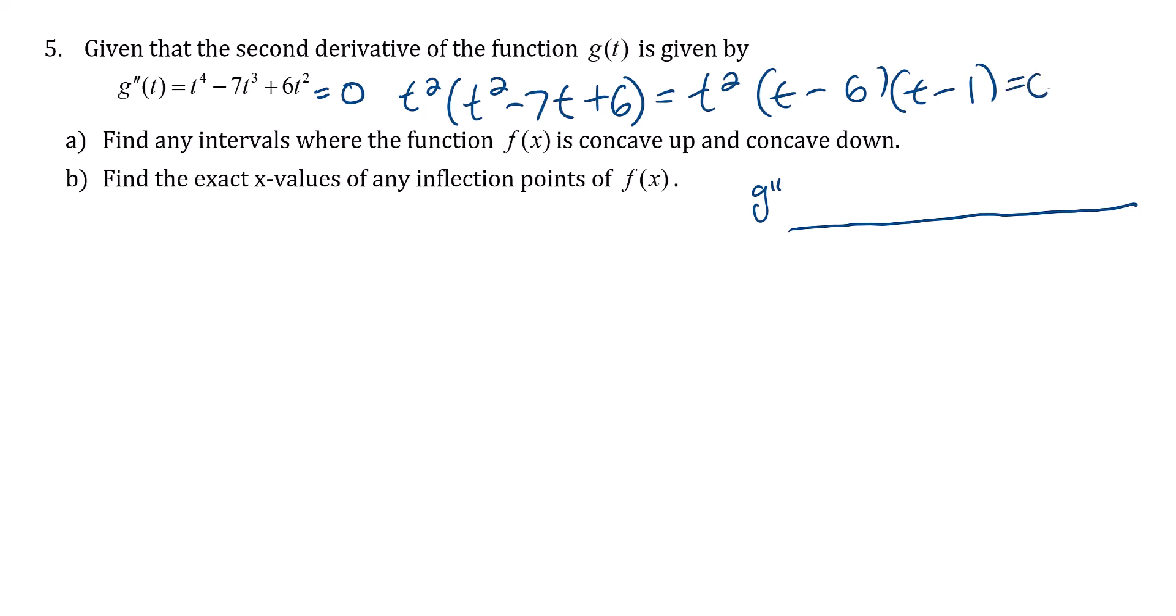So we want to know when that equals 0. It looks like we've got three critical numbers: when t is 0, when t is 1, and when t is 6.